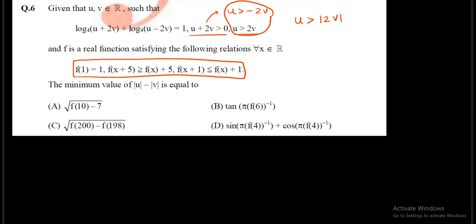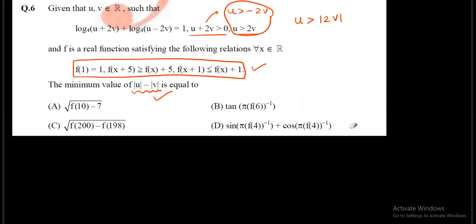What we need to find out is the minimum value of |u| − |v|. Right now I cannot find any usage of the function, but once you look at the options you will see it is a combination of two questions. You have to solve one part and give your answer in the form of another. So I need the function f(x) to select the correct option, but first I have to evaluate this expression.